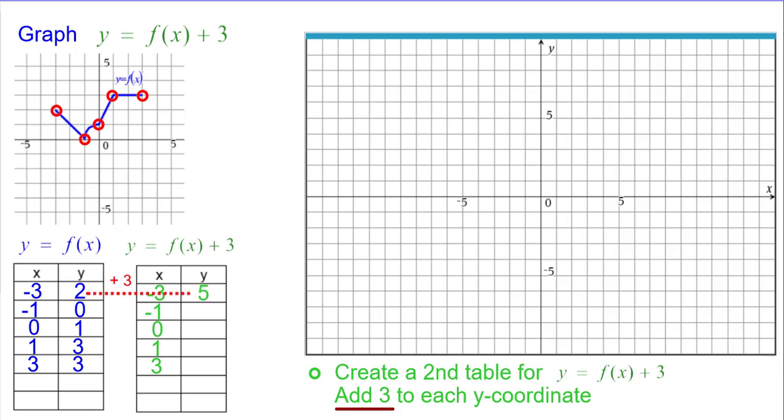Adding 2 + 3 we get 5, so (-3, 5). Then 0 + 3 = 3, giving (-1, 3). Next, 1 + 3 = 4, so (0, 4). Then 3 + 3 = 6, giving (1, 6). And again 3 + 3 = 6, so (3, 6).